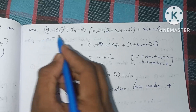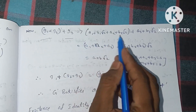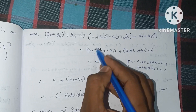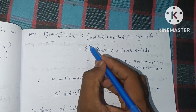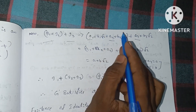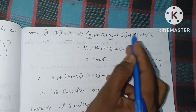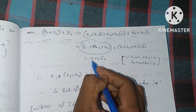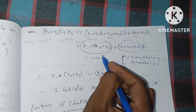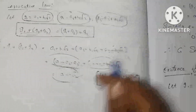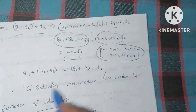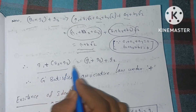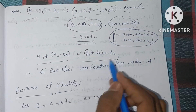The right hand side, g1 plus g2 plus g3, gives the same values: a1 plus a2 plus a3 plus b1 plus b2 plus b3 root 2. This is the same form a plus b root 2. Therefore, g1 plus g2 plus g3 is equal to g1 plus g2 plus g3.